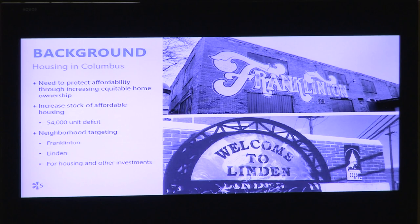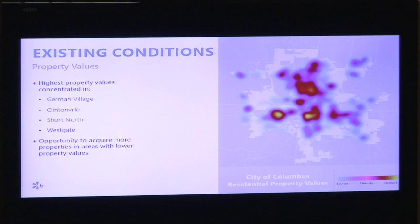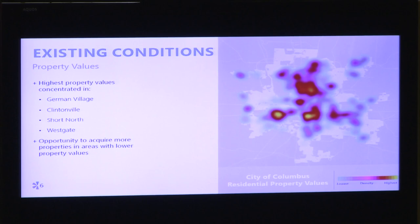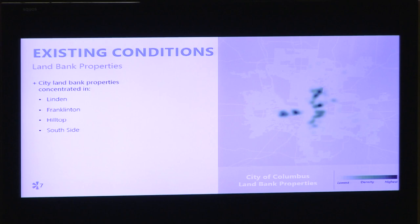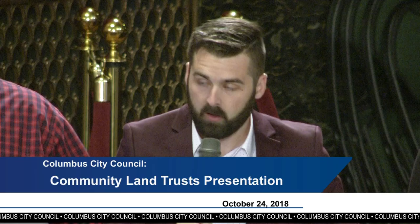We wanted to look at how data can inform us about the current condition of Columbus and what it can suggest about how a citywide land trust could be employed. The first map is a heat map of 2018 property values around Columbus — the highest relative property values generally follow and radiate from High Street, including neighborhoods like Clintonville, the Short North, and German Village, with a pocket of higher values in the Westgate area on the west side. The second map shows the locations and concentrations of land bank properties, with a concentration of opportunity in the neighborhoods of Linden, Franklinton, Hilltop, and the south side.